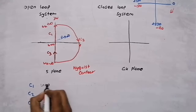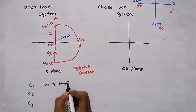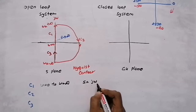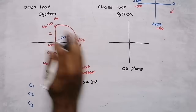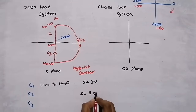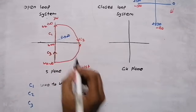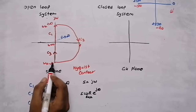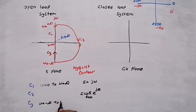C1 is from omega equal to 0 to omega equal to infinity — wherever there is S, replace it with j omega. For C2, the entire right hand side with R tending to infinity — instead of S, substitute R e raised to j theta, where R tends to infinity. For C3, omega varies from minus infinity to 0, and again substitute S equal to j omega.